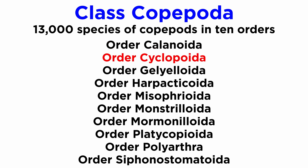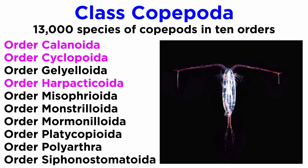The ten orders of Copepoda are: Calanoida, Cyclopoida, Gelyelloida, Harpacticoida, Misophrioida, Monstriloida, Mormonilloida, Platycopioida, Polyarthra, and Siphonostomatoida. Free-living members of the largest orders — Calanoida, Cyclopoida, and Harpacticoida — generally have a typical copepod anatomy of a short cylindrical body with a round or beaked head, though there is great diversity of forms.